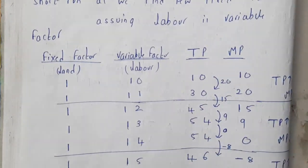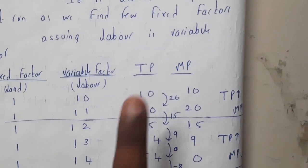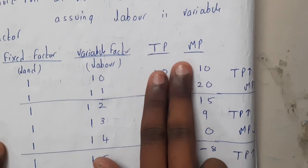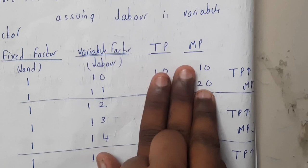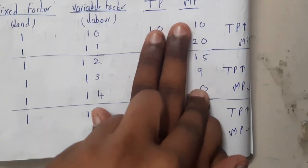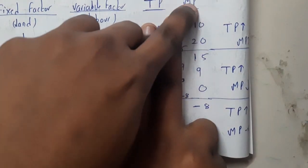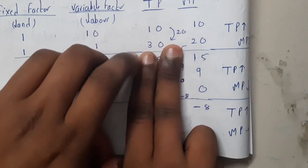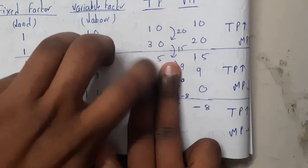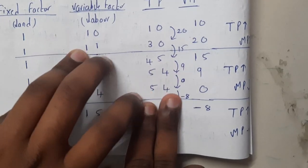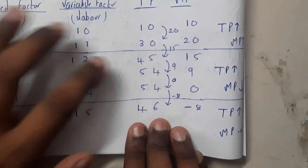We have a table with total product and marginal product columns. For better understanding, first fill in the marginal product, then derive the total product. Starting with marginal product values: 10, 20, then decrement — 15, 9, then 0, then go negative. Add each MP to the running total: TP becomes 10, 30, 45, 54, 54, then 54 minus 8 gives 46.